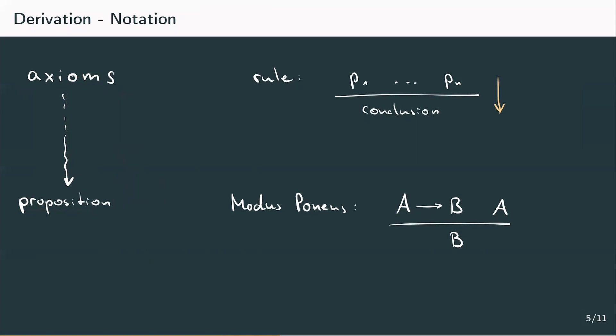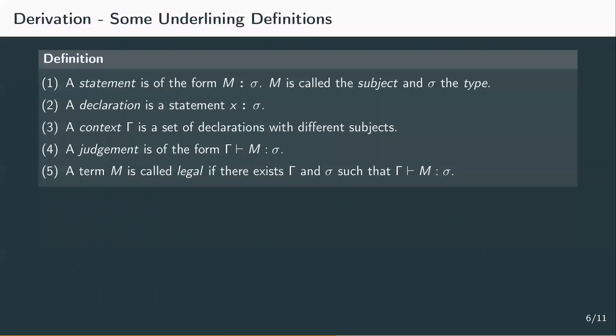To formulate premises, propositions, and conclusions, we need to introduce a few definitions. Whenever we want to state that a term m has type sigma, we can do so in a statement where we put the term — called a subject — before a colon, and the type behind it. If the term is only a variable, such a statement is called a declaration. A context gamma is a set of declarations for pairwise different variables: we take a set of variables, give each of them a type, and put them together. With such a context, we're going to set the types of free variables, representing what we assume to be true in our system.